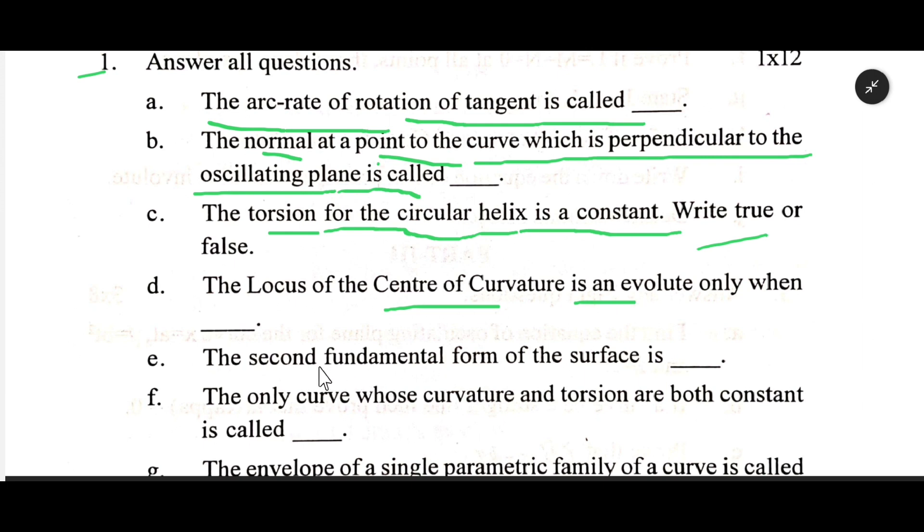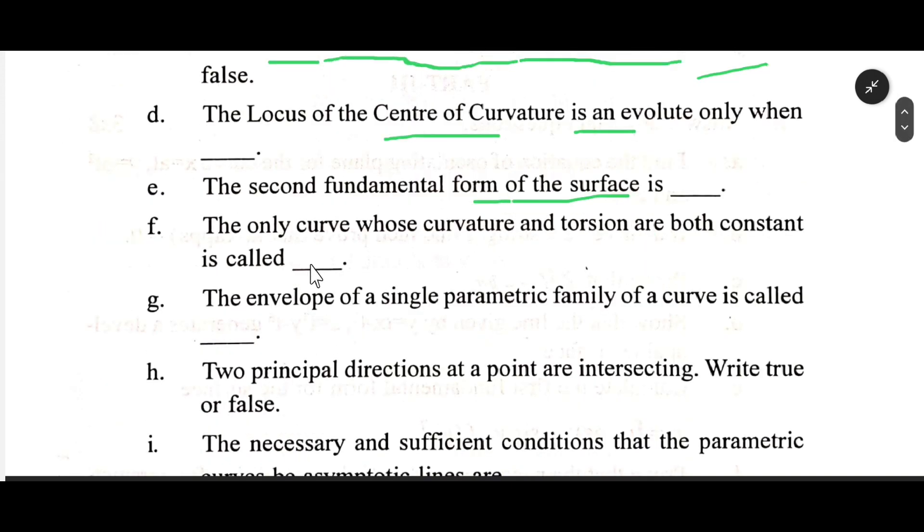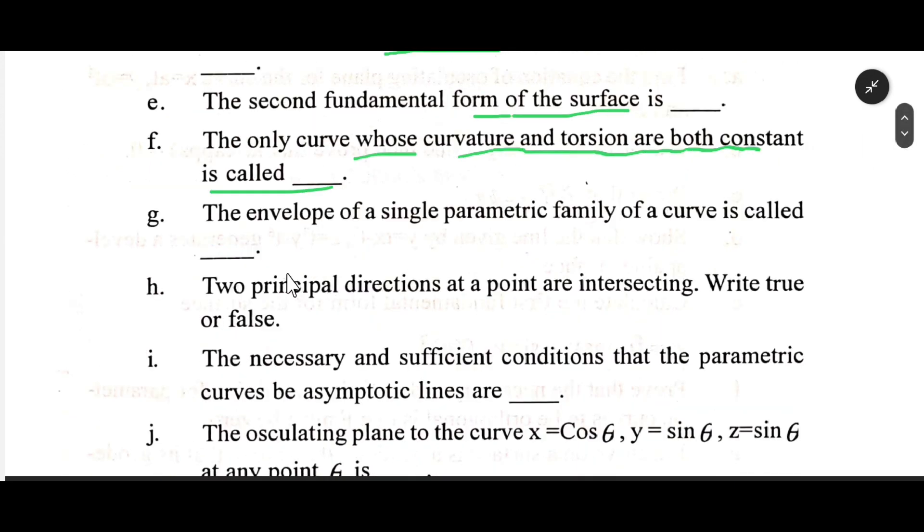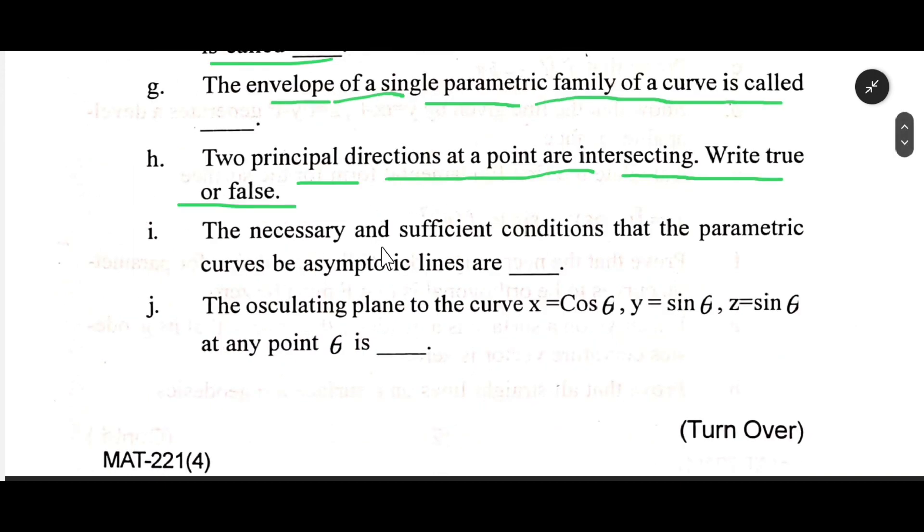The second fundamental form of the surface is dash. The only curve whose curvature and torsion are both constant is called dash. The envelope of a single parametric family of a curve is called dash.